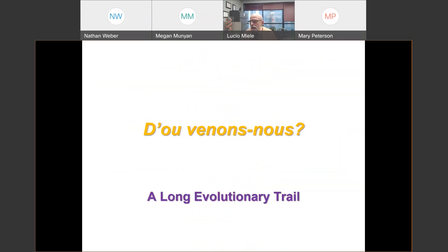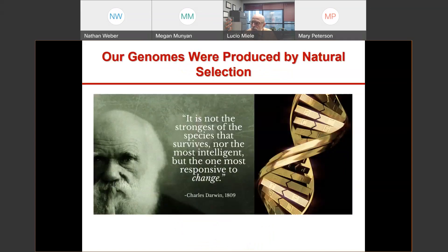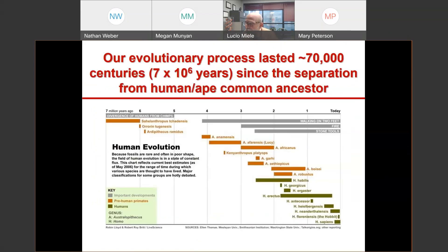Where do we come from? We come from a very long evolutionary trail. Remember Charles Darwin said it's not the strongest species that survives, nor the most intelligent, but the species most responsive to change. Our conditions have changed significantly throughout the history of humankind.